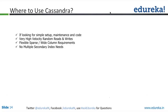Cassandra naturally is a simple setup, maintenance, and code. When it comes to maintenance of Cassandra, the administrator has to do nothing — most things are automatically done. If you want to scale up or scale down, remove a node or add a new node, it's very fast in Cassandra. You don't have to really worry about re-syncing, re-balancing, or distribution of data — all these things are automatically done.